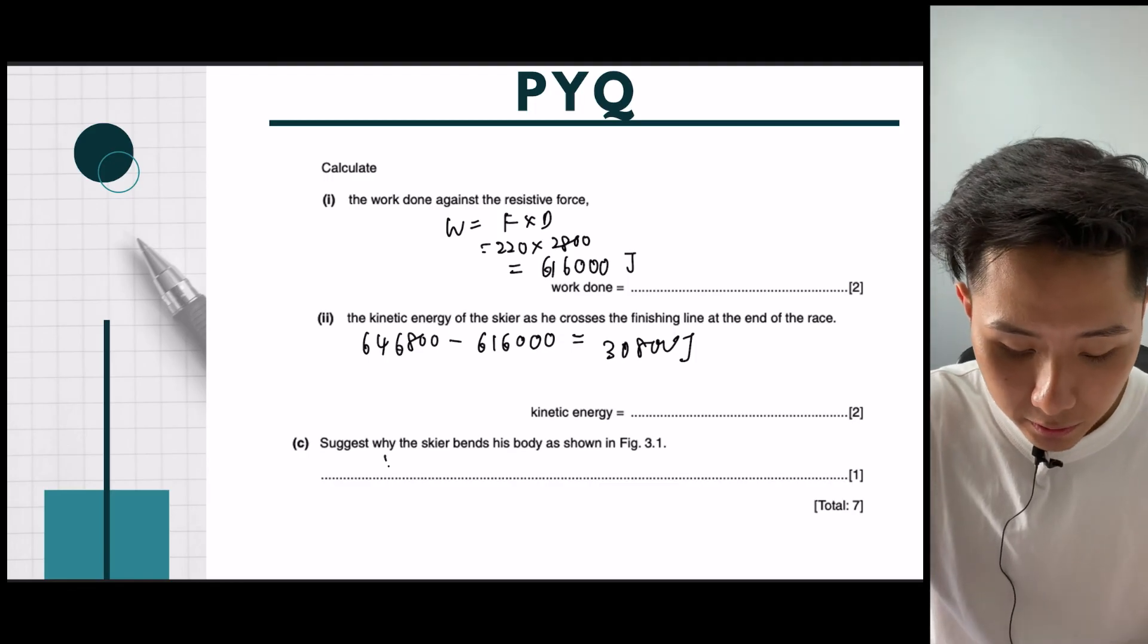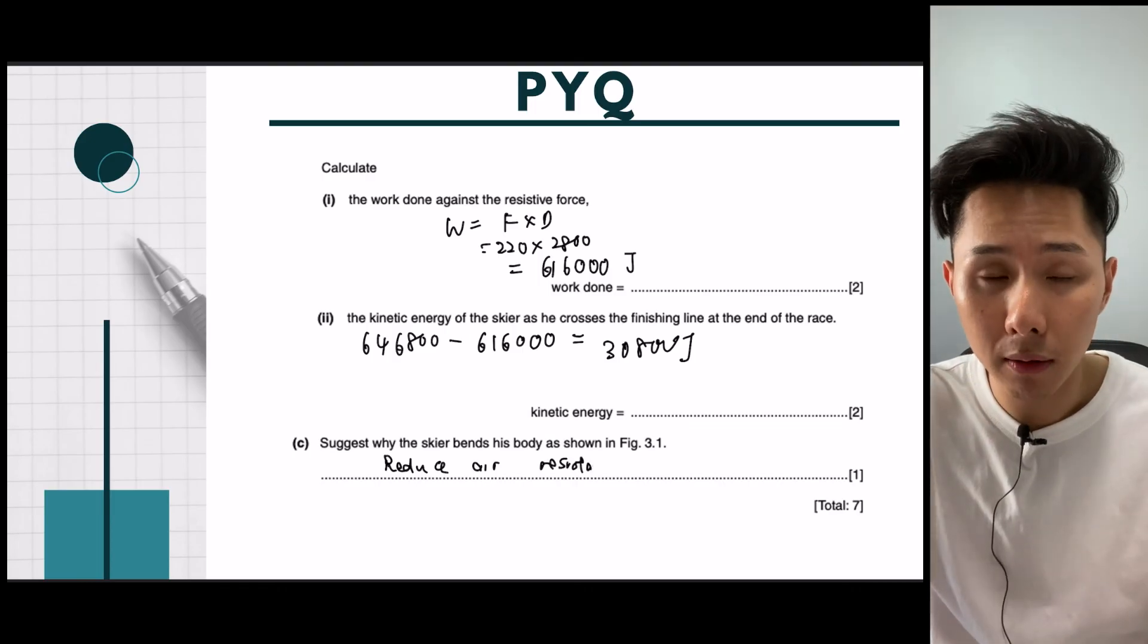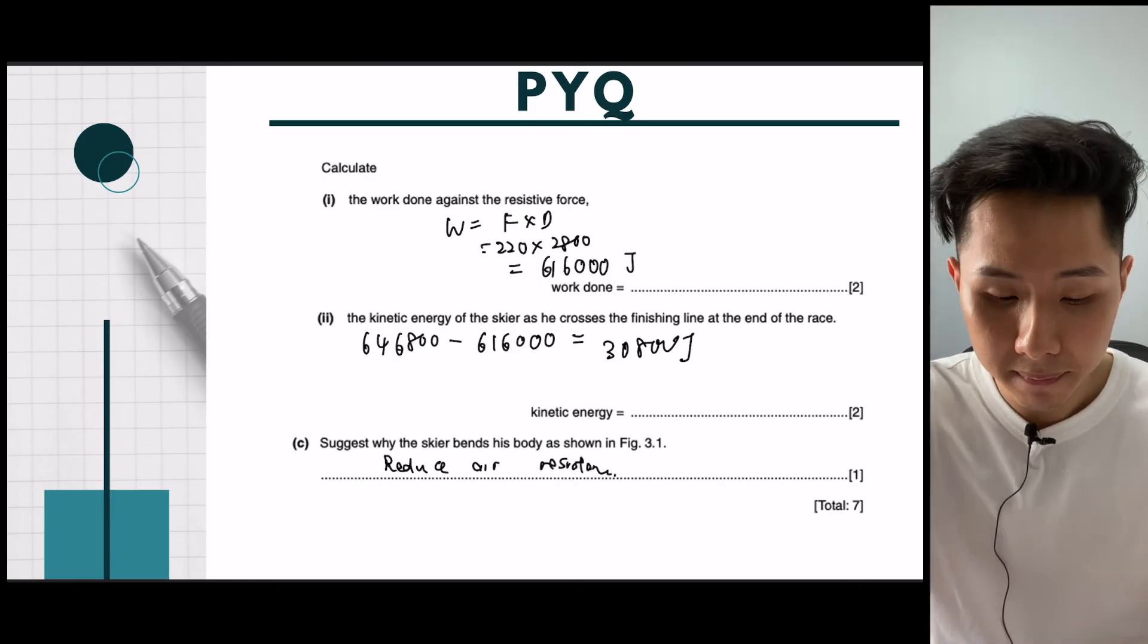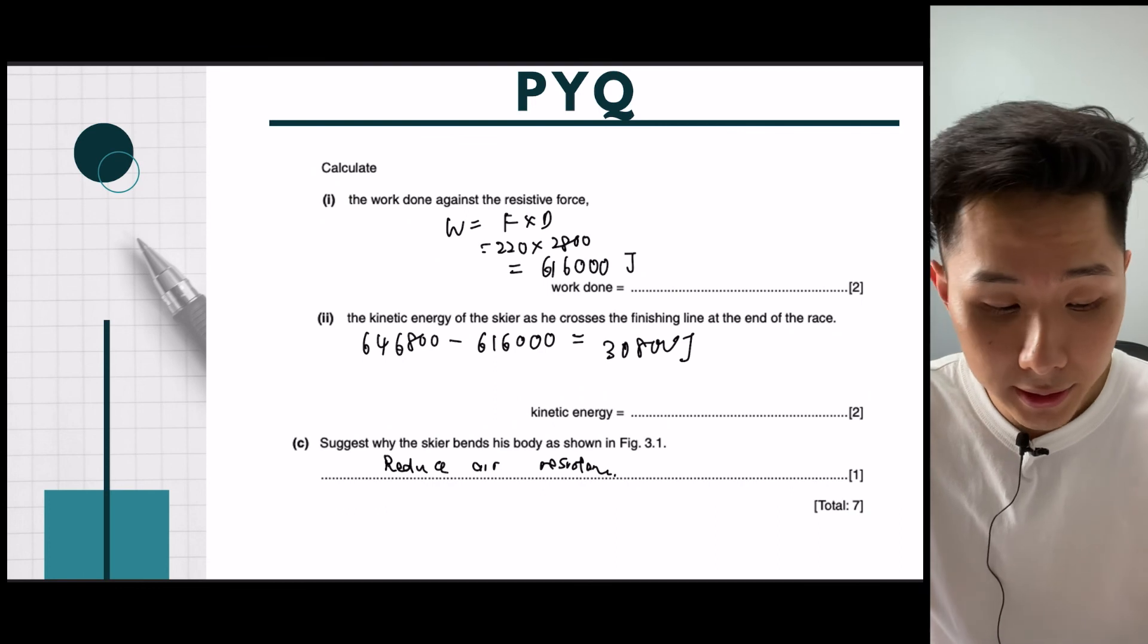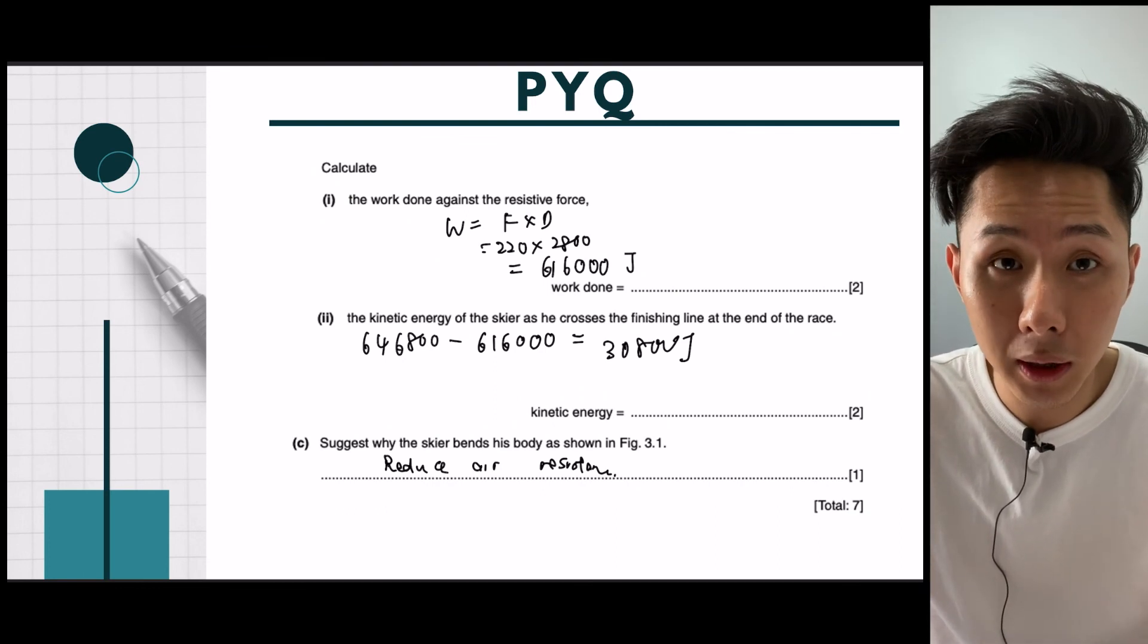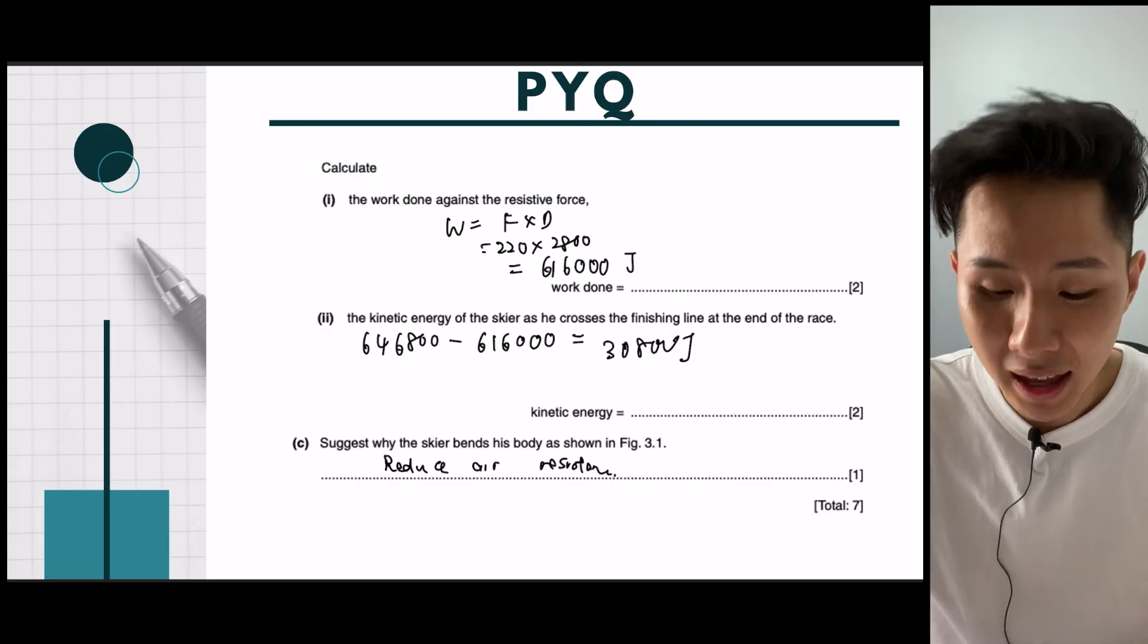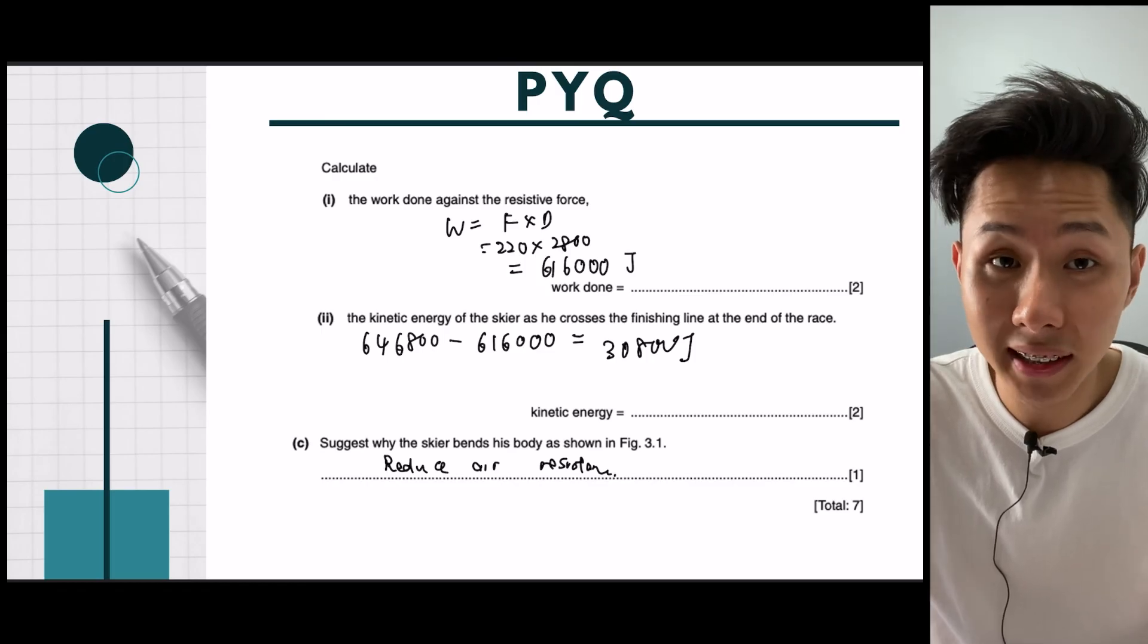Suggest why the skier bends his body, so that to reduce air resistance. Because when you bend your body, you'll be in a more aerodynamic shape. And that's about it for this chapter on work done and also power. Remember the formula for work done is force times distance. And the formula for power is work done divided by time. And thank you so much for watching, I'll see you in the next video.